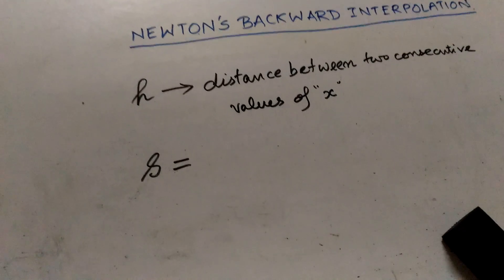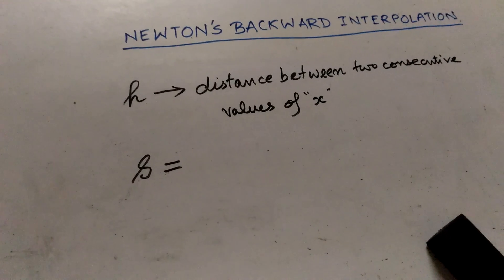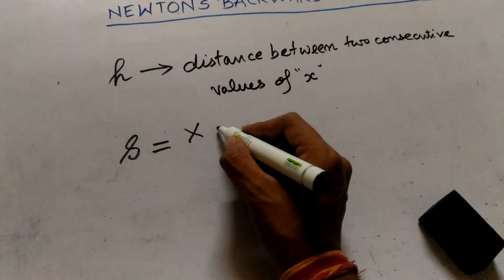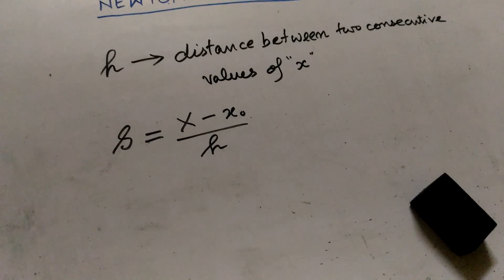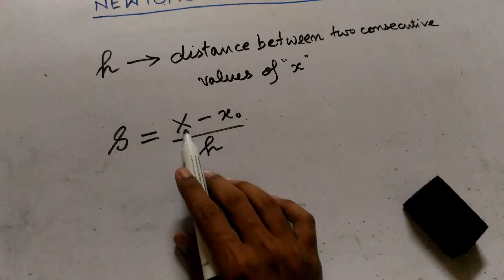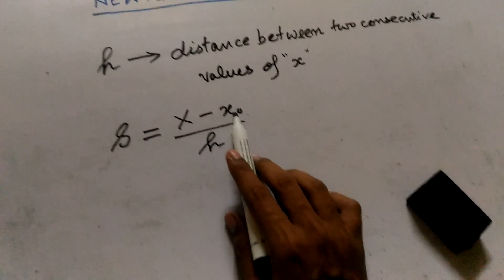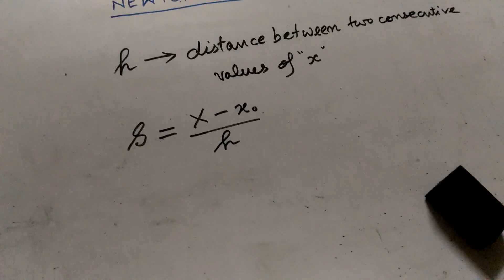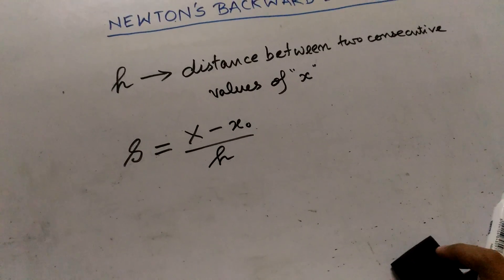Now, what is S? If you can recollect, in Newton's Forward Interpolation method, the value of S is equal to x minus x₀ divided by h, where x is the given value of x for which we have to find f(x) or y(x), x₀ is the first term in the column containing the values of x, and h is the distance between two consecutive values of x.